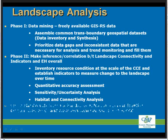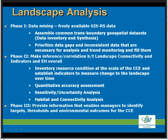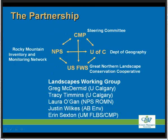The final phase and outcome for this project is for our partners — the University of Calgary, the National Park Service Inventory and Monitoring Network, and the University of Montana — to provide knowledge and science information to managers so that they can identify targets, thresholds, and environmental outcomes at the scale of the Crown of the Continent Ecosystem and ultimately overcome those jurisdictional boundaries. Our partnership includes the Crown Managers Partnership Steering Committee, the National Park Service Rocky Mountain Inventory and Monitoring Network, the University of Calgary Department of Geography, and the Great Northern Landscape Conservation Cooperative.